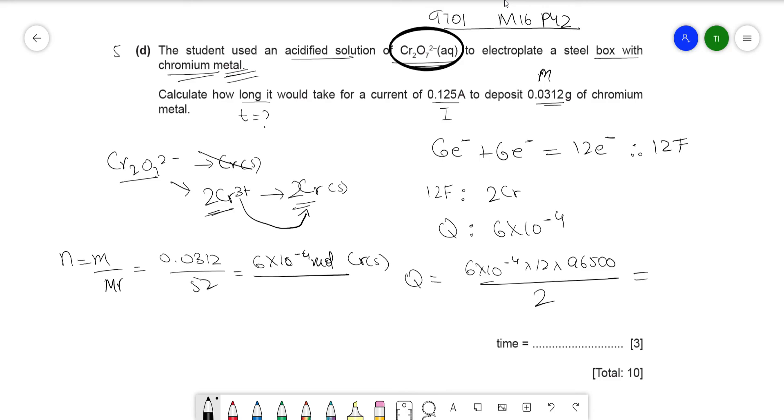So the answer comes as 347.4 coulombs. Now you use the equation Q equals It. Therefore, make t the subject of the equation: Q divided by I. So 347.4 divided by 0.125. So time is...